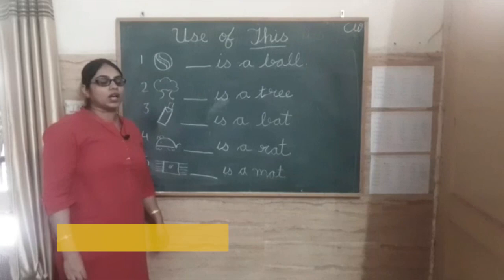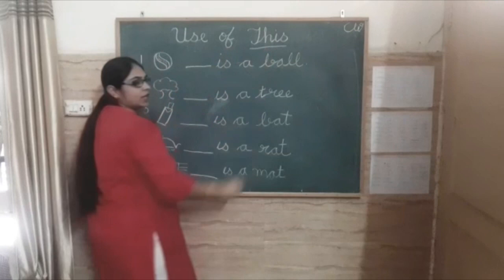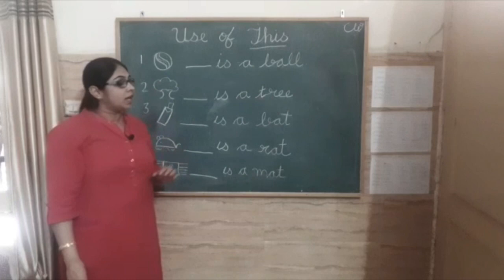Good morning UKG class. Today I'm going to tell you about a new concept: the use of 'this.' We can use 'this' with persons, animals, or objects. But the person, animal, or object must be only one.